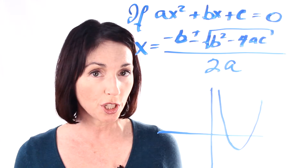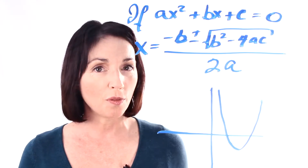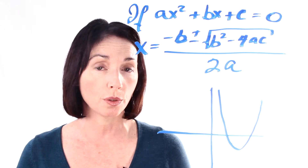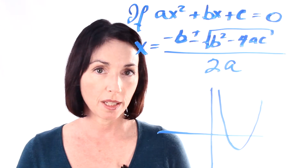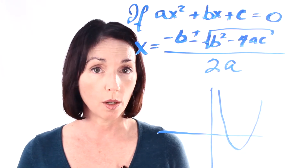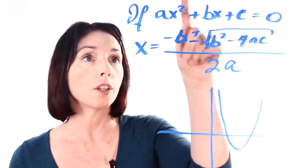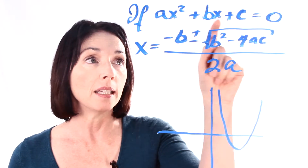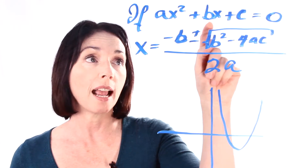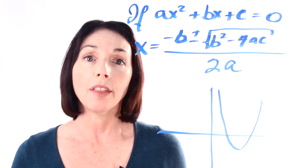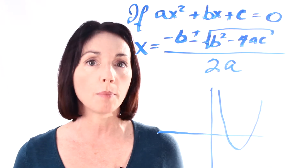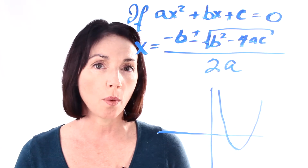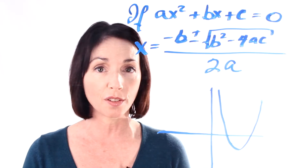Now a lot of people find the quadratic formula intimidating to look at, but it's actually pretty straightforward to use. There are three basic steps. The first one is make sure that your quadratic equation — the one you need to solve — is in the right form for the condition. The second step is to correctly identify a, b, and c: the two coefficients and the constant term in your quadratic equation. And the third step is just plugging those numbers into the formula and calculating. So it's actually pretty straightforward, and we're going to go through each of those steps in this series of lessons.